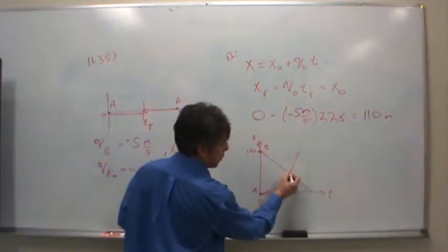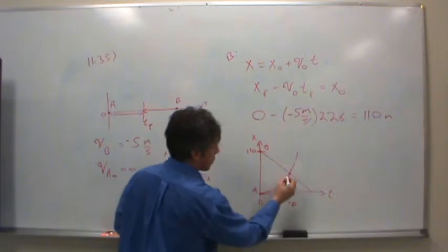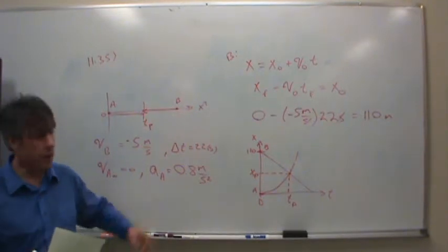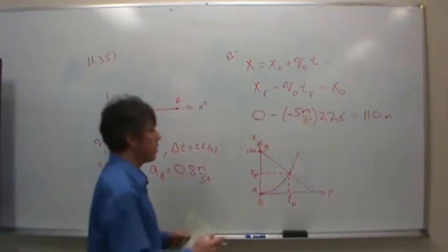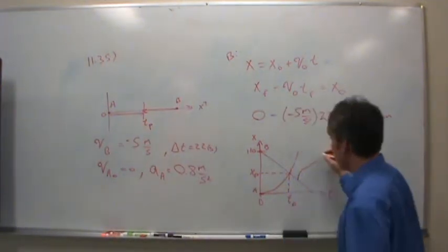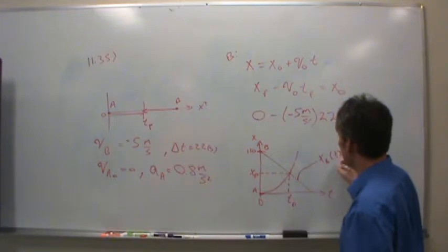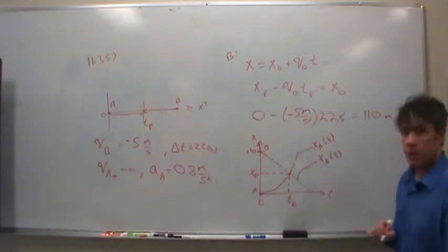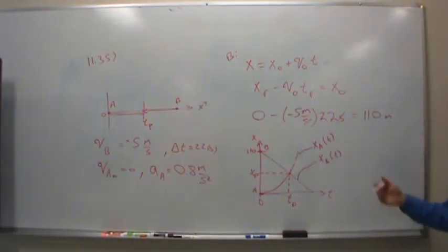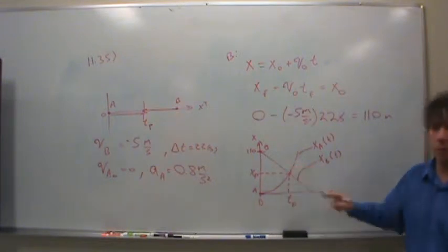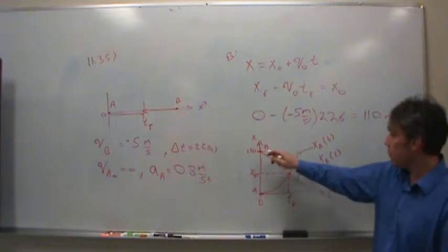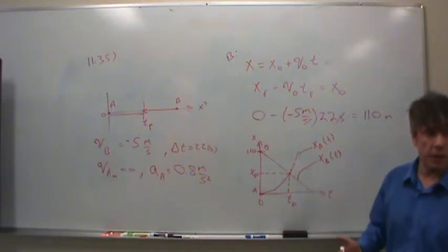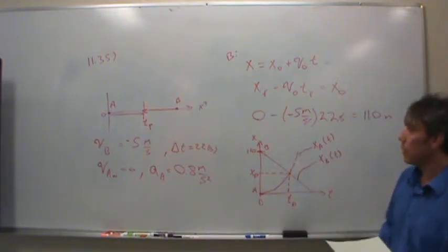Wherever those two points meet is the point in time T sub P that we're interested in and is the position where they cross each other. Does that make sense? That's what we're looking for. So essentially, all we really need to do is come up with an equation that gives us the position of B as a function of time and another equation that gives us the position of A as a function of time. Once we have those, we can set those two equal to each other and find this point.